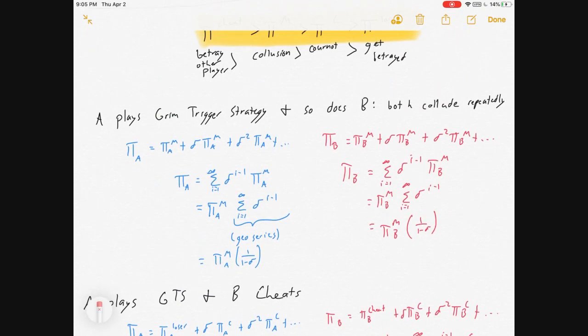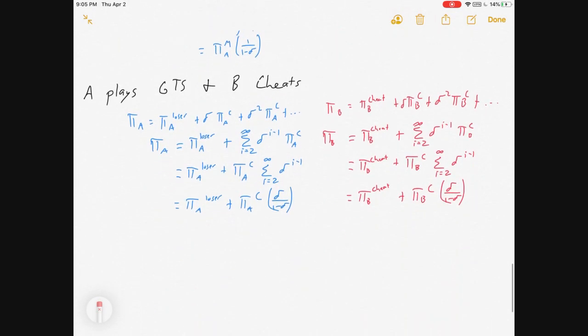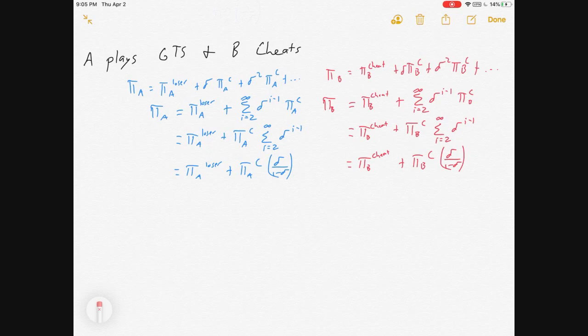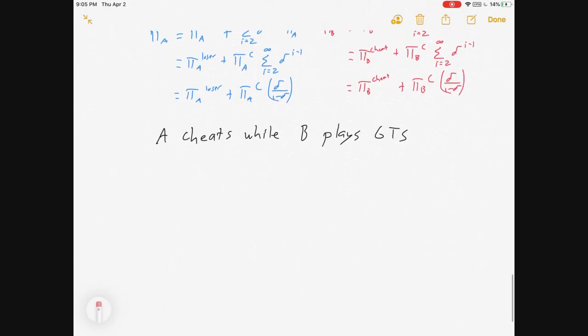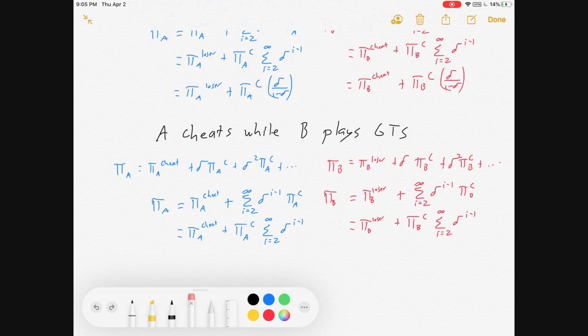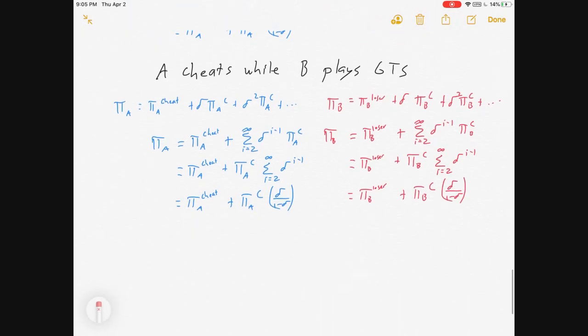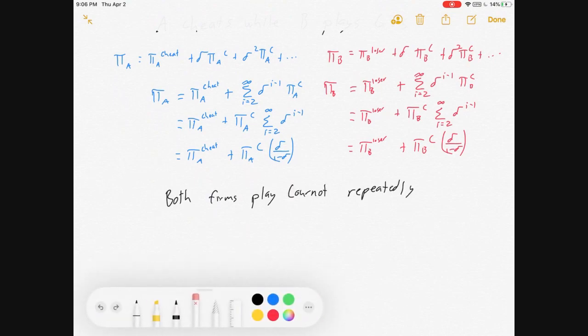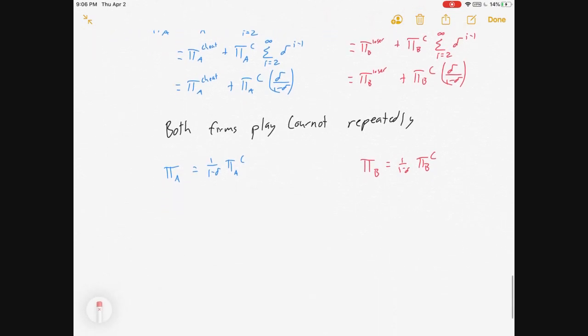If your sum is the same profit forever from one to infinity, it's just one over one minus delta. If you have one profit in period one, and then a different profit from period two forever more, it looks like this. The period one profit plus delta over one minus delta times your competition profit. All right, vice versa, if A cheats while player B plays grim trigger strategy, all the same ideas, only A gets the cheating profit first, and B gets the loser profit first, and then they have repeated Cournot. So A gets cheating, plus discounted Cournot stream, B gets losing, plus discounted Cournot stream. And last, if they both just play Cournot repeatedly, then it's just one over one minus delta times the Cournot profits.